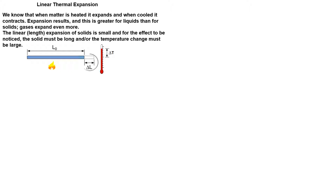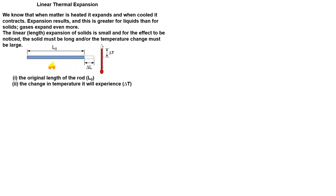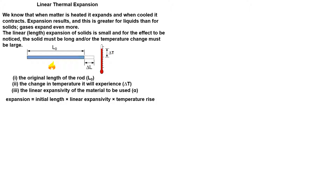This is the expansion or change in length, and this is the change in temperature. The expansion can be calculated if the following are known: the original length of the rod, the change in temperature it will experience, and the linear expansivity of the material. Expansion equals initial length times linear expansivity times temperature rise. Mathematically, this can be written as shown.